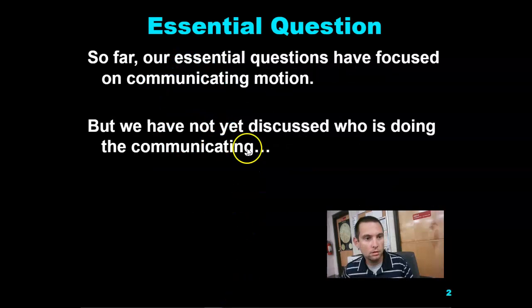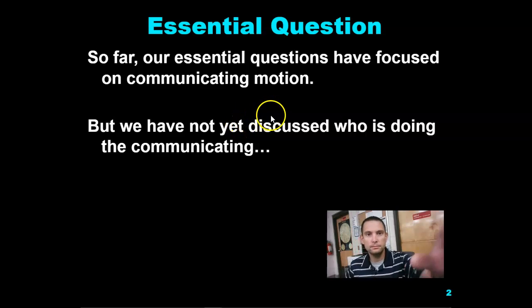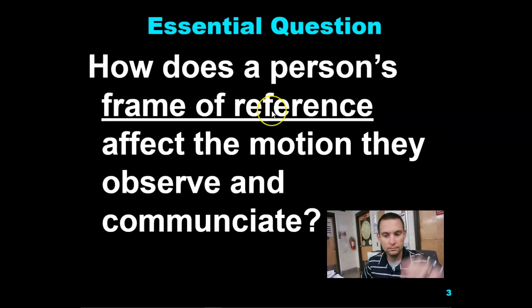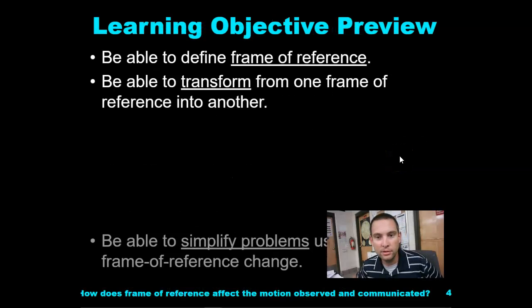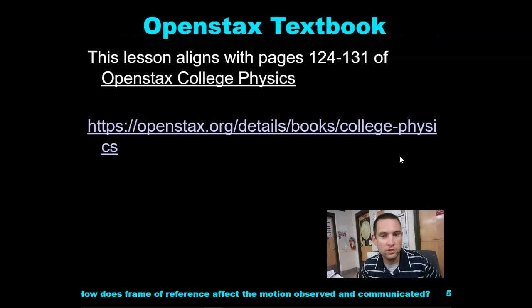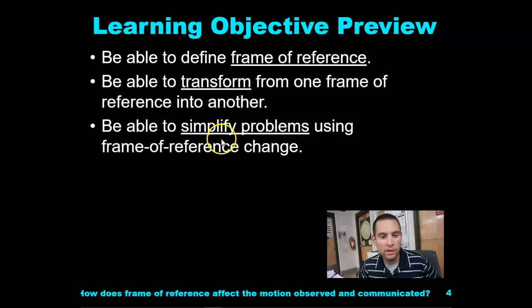Frames of reference. So far we've been focusing on communicating motion, but we haven't discussed who's doing the communicating. How does a person's frame of reference affect the motion they observe and communicate? Here's our objectives: be able to define frame of reference, transform from one frame of reference to another, and finally be able to simplify problems using frame of reference change.